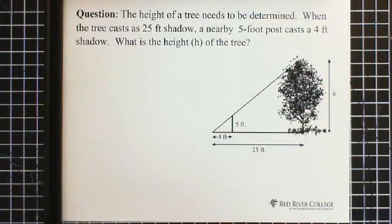Okay. Next question. So again, you can pause the video. Work on this question. What the question says is the height of a tree needs to be determined. When the tree casts a 25-foot shadow, a nearby 5-foot post casts a 4-foot shadow. What is the height of the tree? So pause the video. Try the question. Then restart the video and I will work on the question.